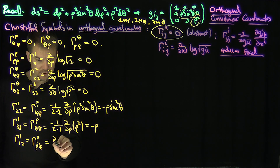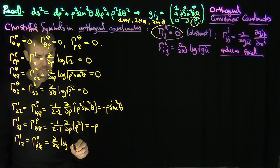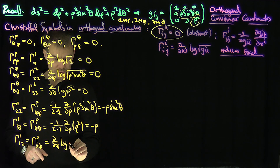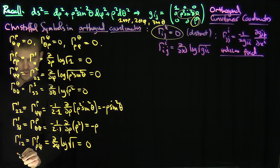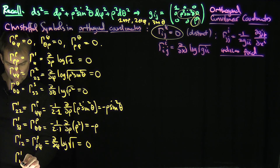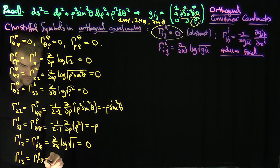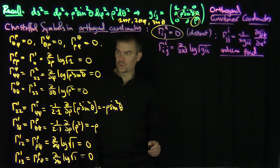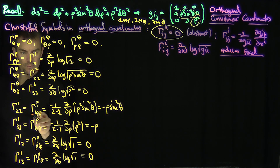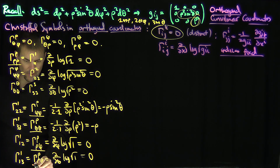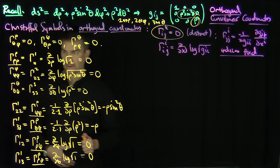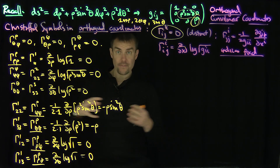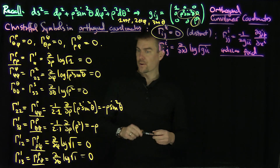For γ^(ρ,ρ,φ), we take the φ-derivative of log(√g_11) = log(√1) = 0. Similarly, γ^(ρ,ρ,θ) = γ^1_13 requires the θ-derivative of log(√1), which is also 0. That handles all the ρ cases: γ^(ρ,ρ,ρ), γ^(ρ,φ,φ), γ^(ρ,θ,θ), γ^(ρ,ρ,φ), and γ^(ρ,ρ,θ) — everything else with a ρ index is 0.